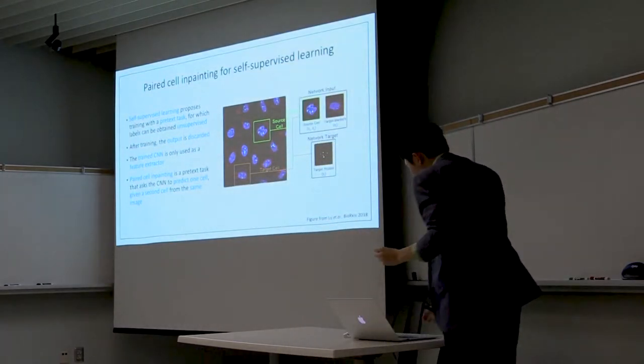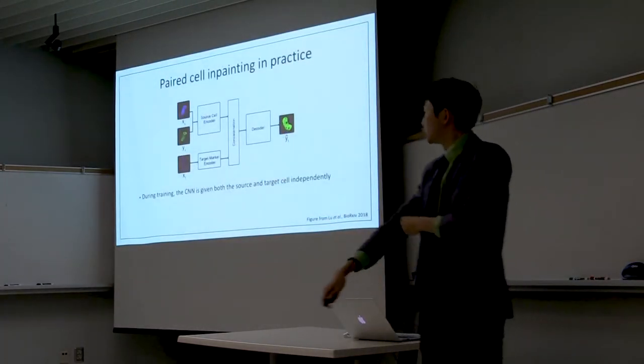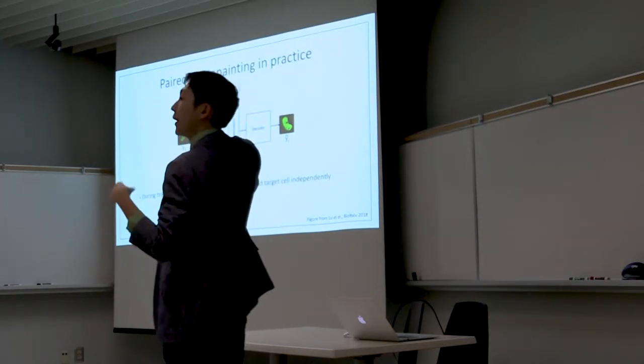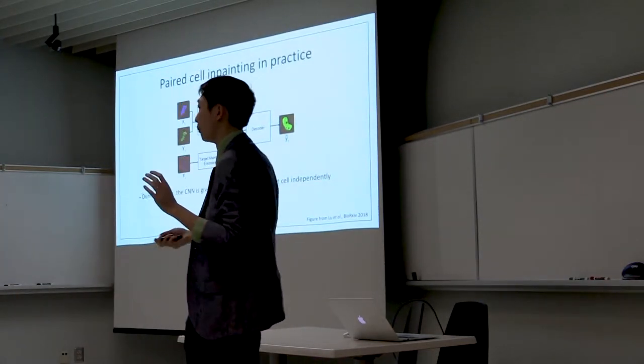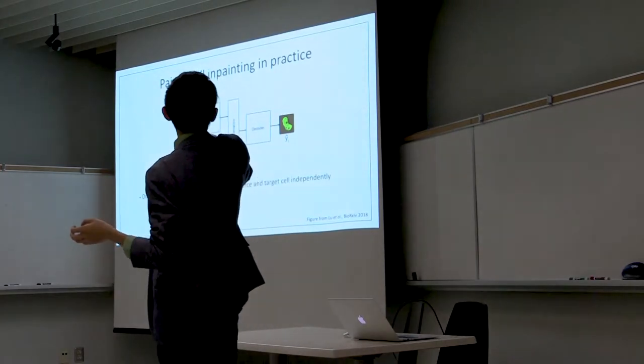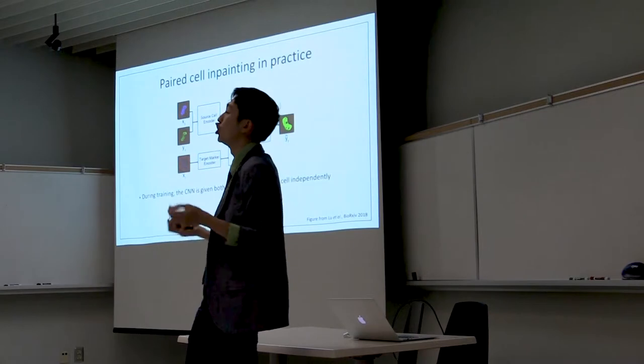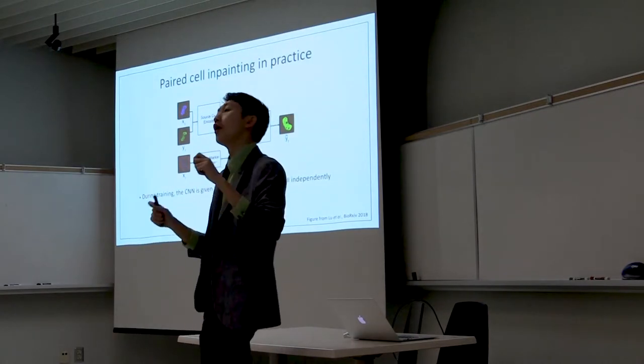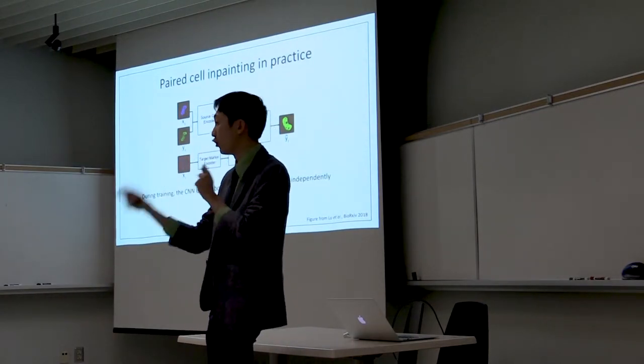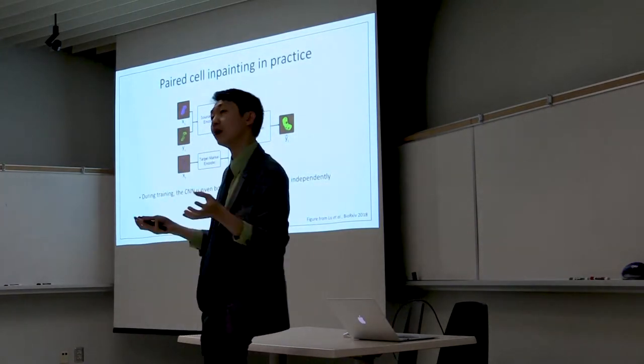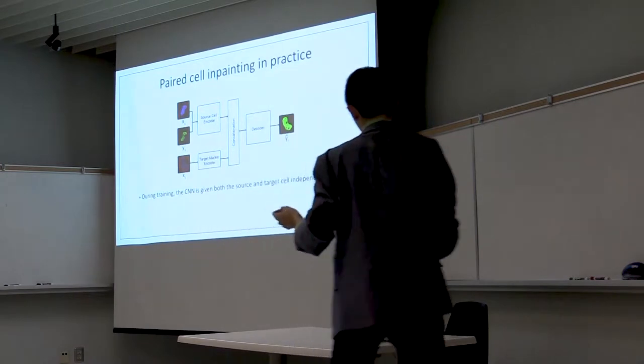So that's the concept, and here's how you implement it. This is the conceptual representation of our neural network. And what we're going to do is we're going to pick two random cells from the same image and have it predict a picture of what it thinks the protein localization looks like in the second cell. And then we'll compare that to the real image, and that's how we train it. We'll do it over and over again for different sets of cells in different images until the model converges.